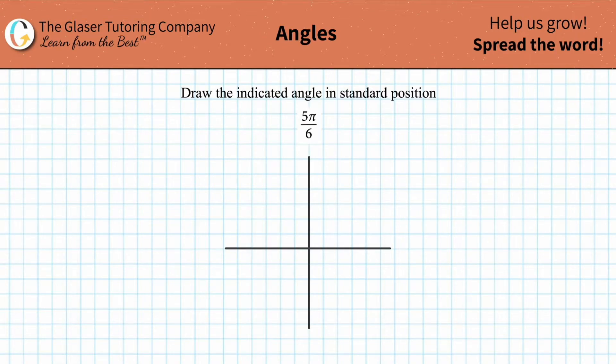So how do we draw a radian measure in standard position? Let's take a look at an example of 5/6 pi radians. We're first always going to draw a line that represents our initial side of the angle in the positive x-axis.